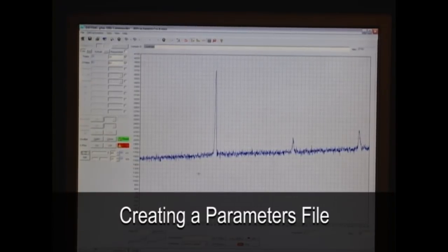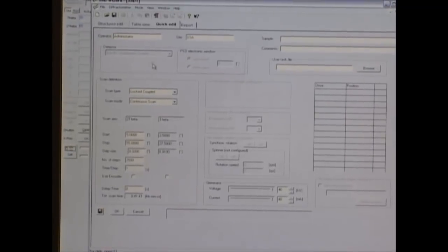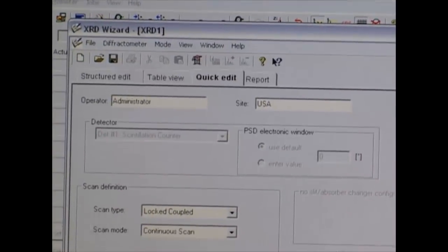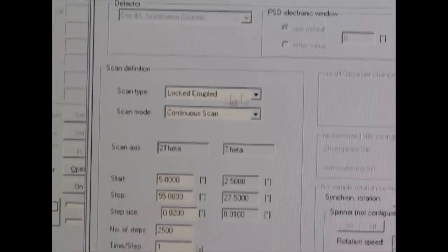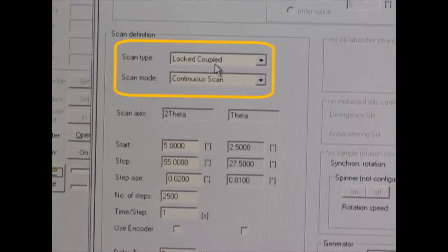The way to set up a parameters file is in a separate application and the link to it is on the toolbar down here and it's called Xperia. When you open up the wizard, you get the quick wizard page, which is fine. The only thing that you really care about is putting your name in here and determining your scan definition and verifying your generator voltage and current is what you want.